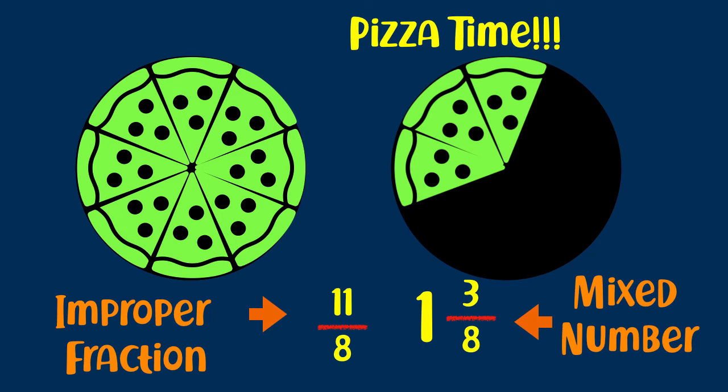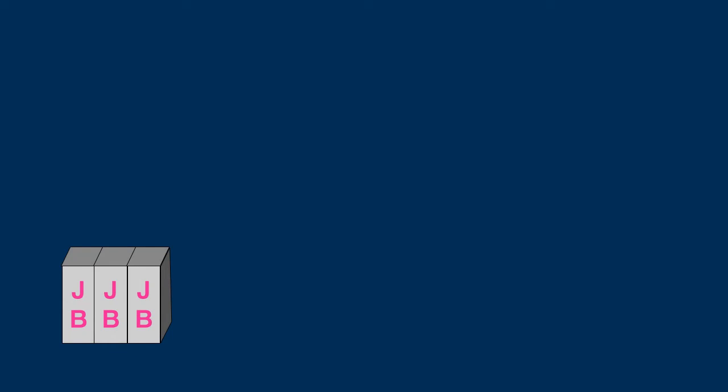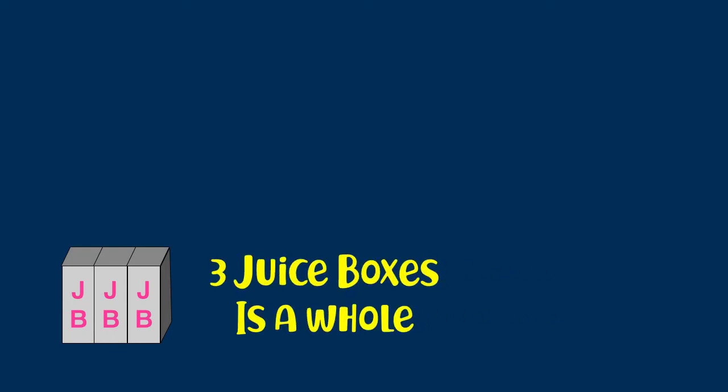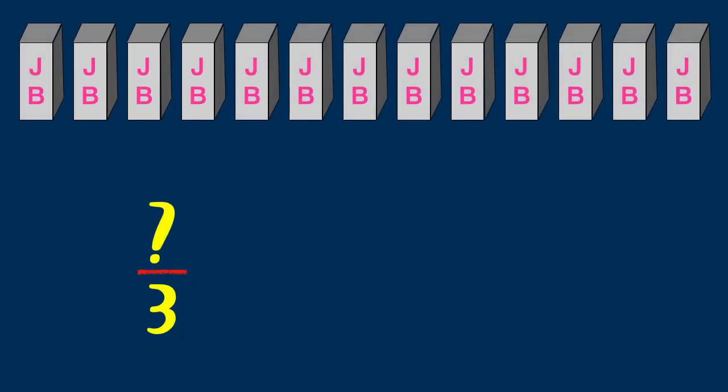Let's talk about lunchtime with pizza. We also need juice boxes. Juice boxes, usually you can buy them, three juice boxes comes as a whole. So we're going to talk about the whole this time is three juice boxes. A package of three juice boxes is the whole. Let's say you have lots of juice boxes. What is the improper fraction? We keep three in the denominator because they come in packages of three. I happen to count this, and there was 13 over three juice boxes. So the improper fraction is 13 over three.